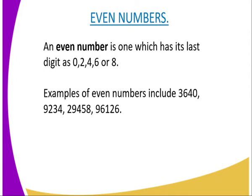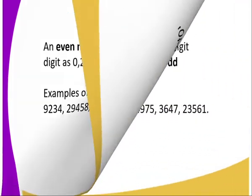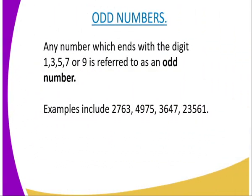Examples of even numbers include 36, 40, 22, 294, 58, 96, 126. As long as the number's last digit, however big it is, is 0, 2, 4, 6 or 8, we refer to that number as an even number.